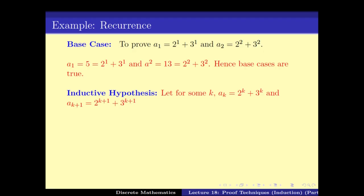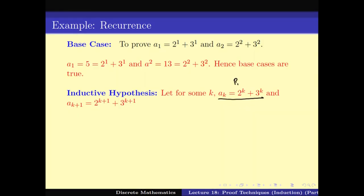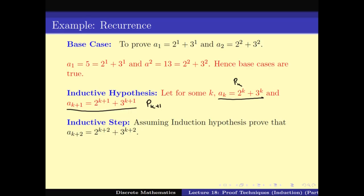Now for the induction hypothesis: we assume that Ak = 2^k + 3^k and Ak+1 = 2^(k+1) + 3^(k+1). Using this induction hypothesis, we have to prove Pk+2, which is that Ak+2 = 2^(k+2) + 3^(k+2).